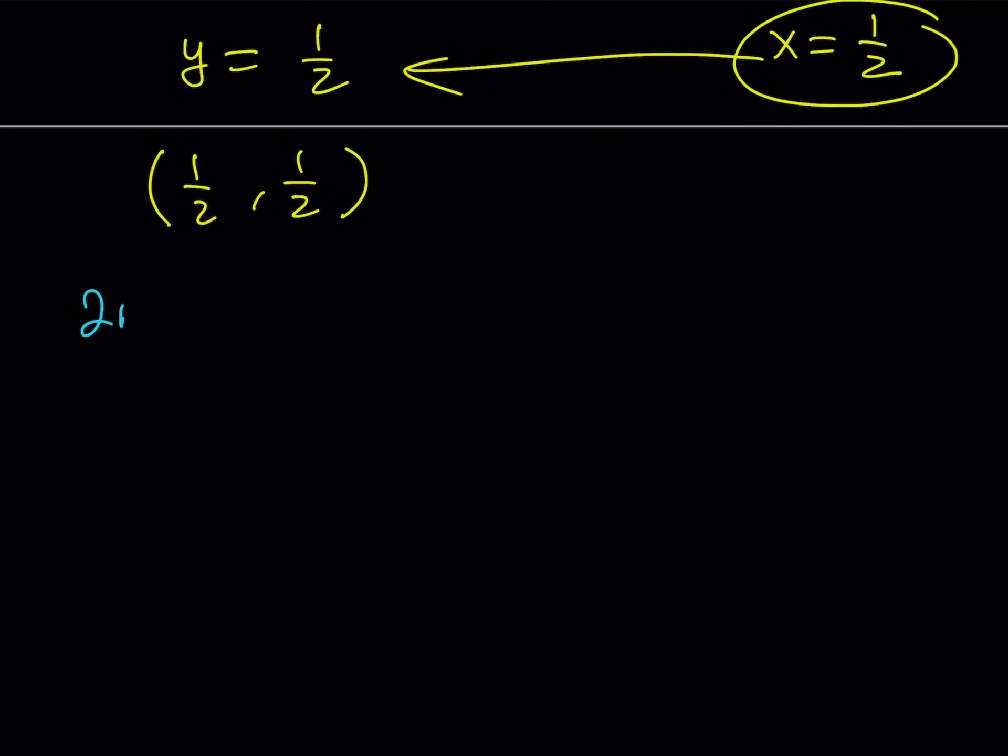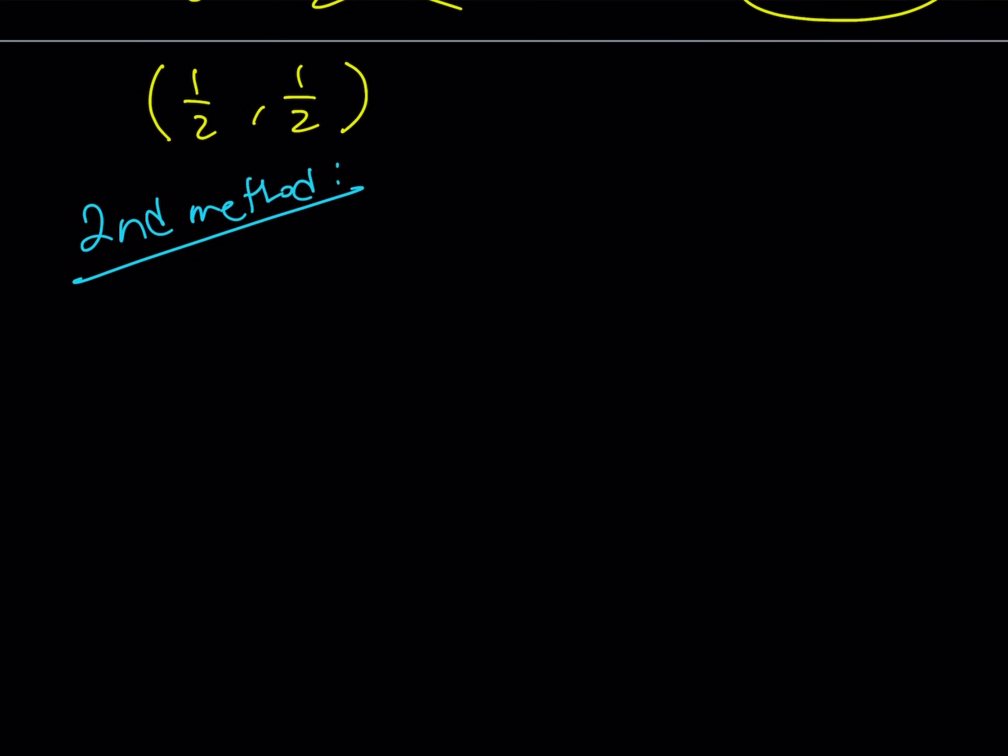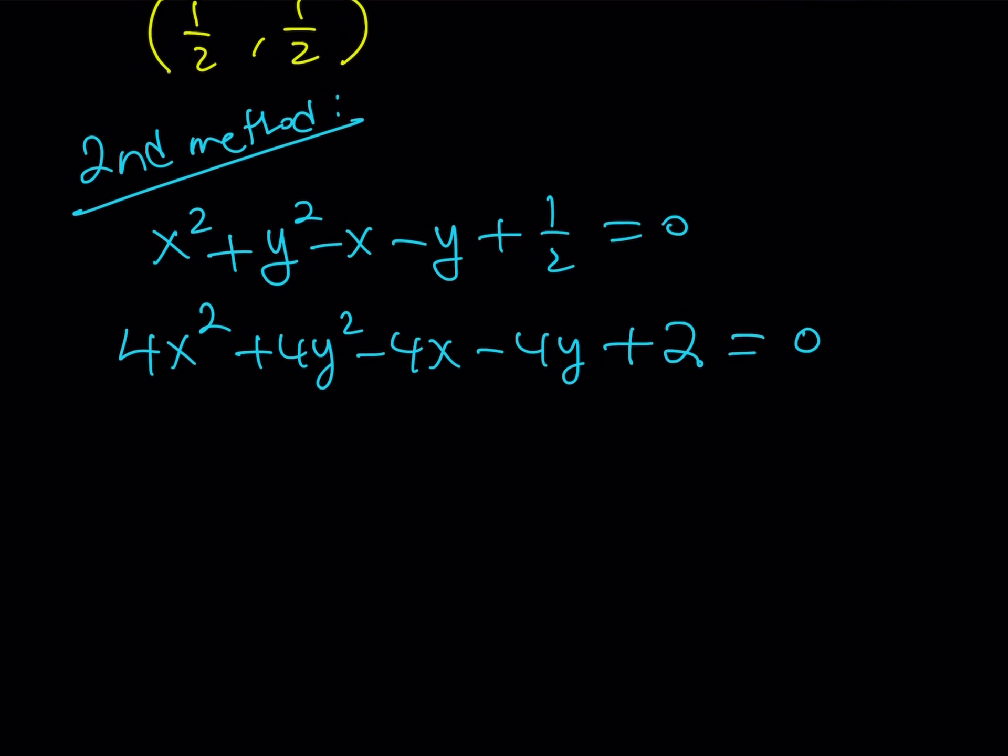Here's the second method. The second method involves putting everything on the same side. Now, instead of multiplying both sides by 2, I want to multiply both sides by 4 this time. You'll see why. When you multiply 4 times 1 half, it is a 2.